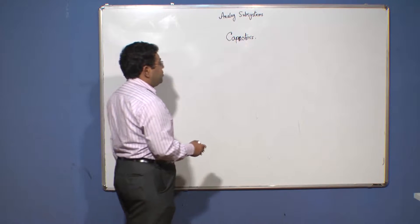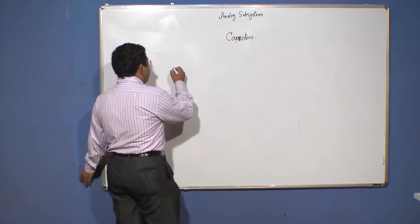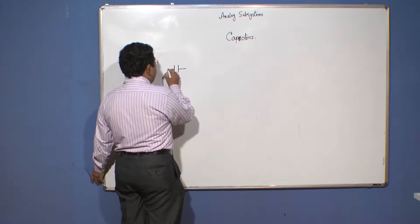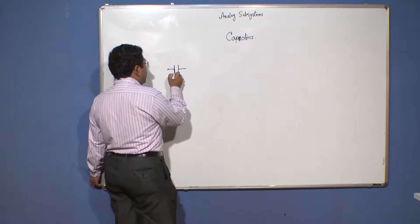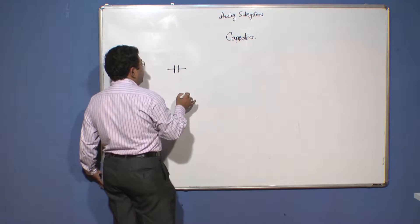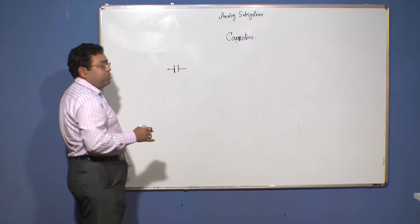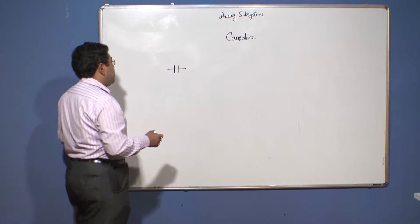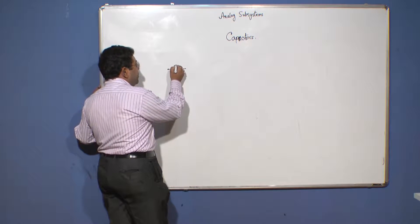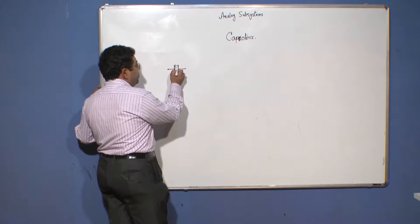We will now discuss about capacitors. A capacitor is basically a two-terminal device such that it acts as an open circuit to DC and a short circuit to AC. There are two plates in the capacitor across which charges are being stored.